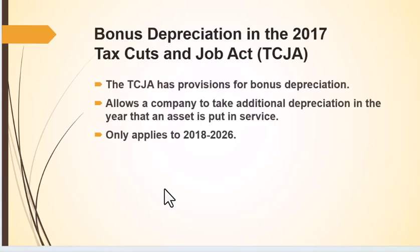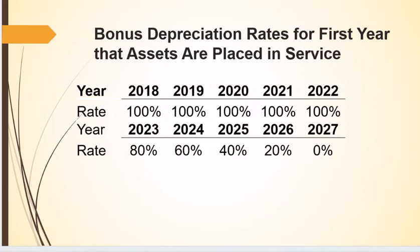There were some changes with the 2017 tax cuts of particular importance in capital budgeting regarding depreciation. This bonus depreciation only applies from 2018 to 2026. For 2023, you can take 80% of the depreciation as a bonus depreciation. Next year it'll be 60%, then 40%, then 20%, and by 2027 we'll be back to regular depreciation rates.